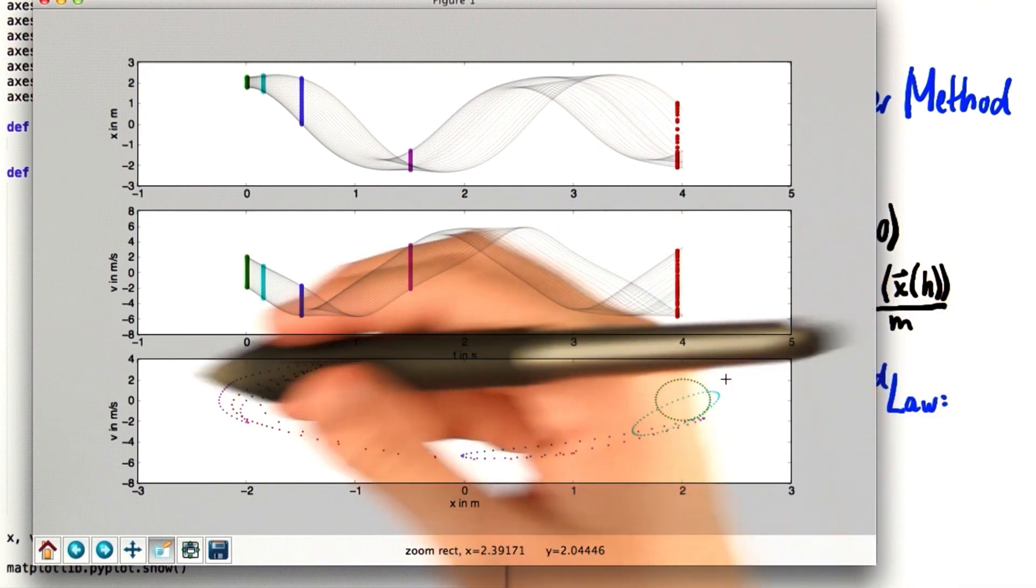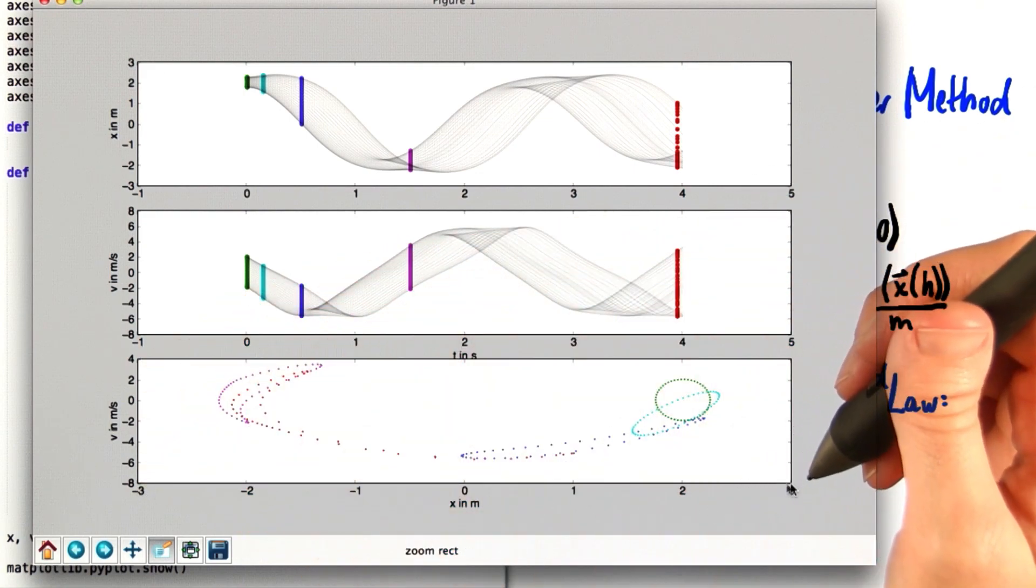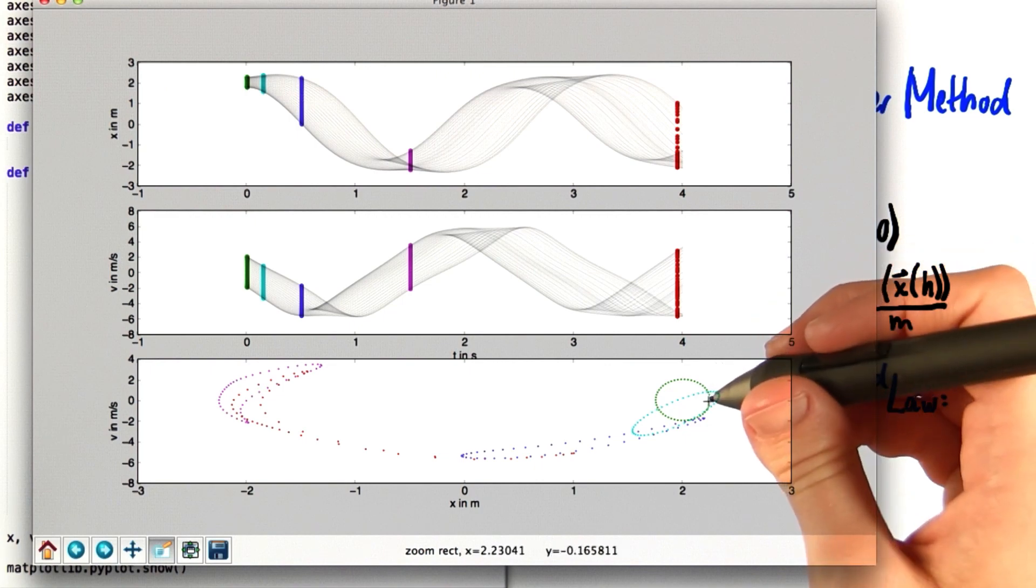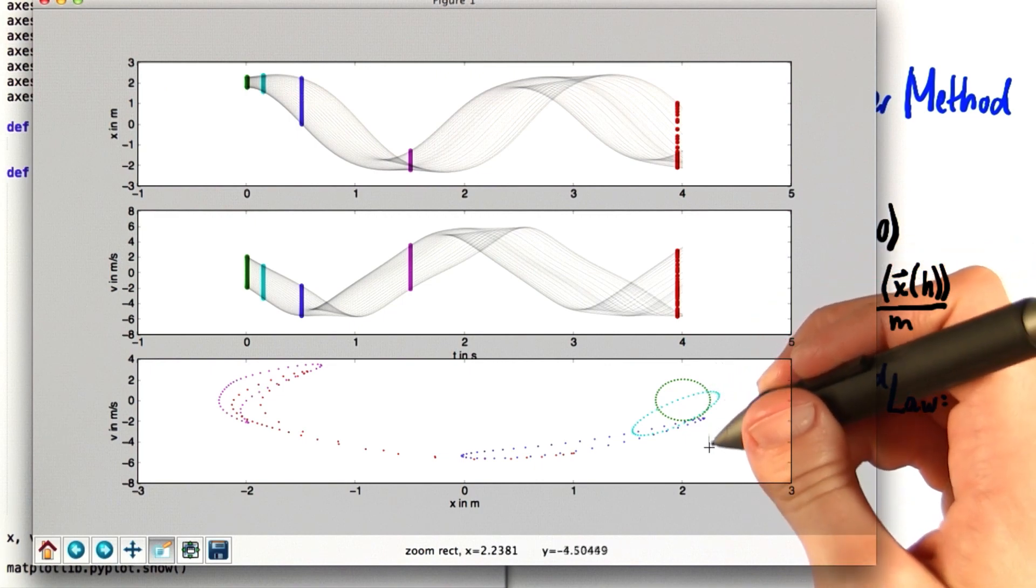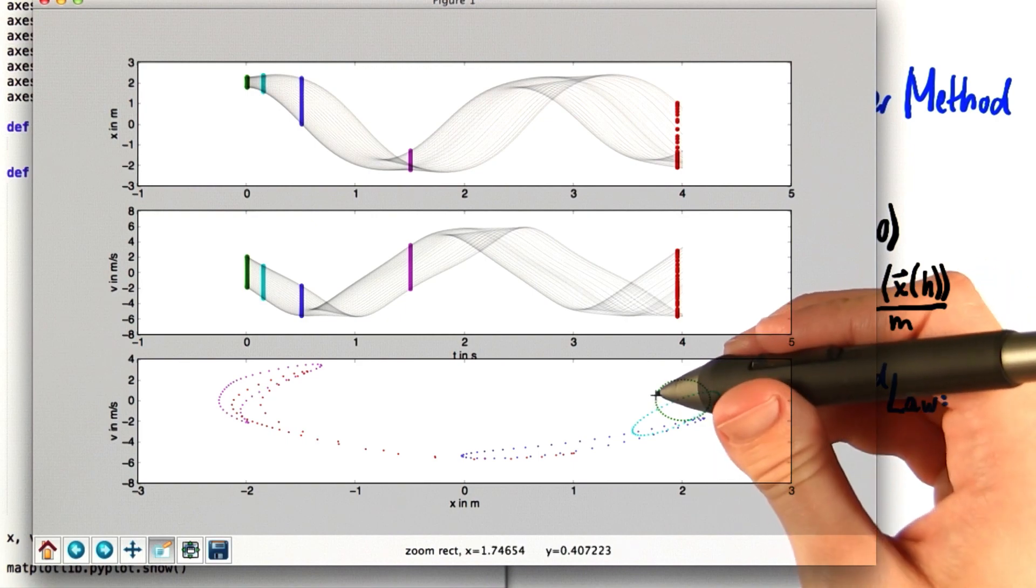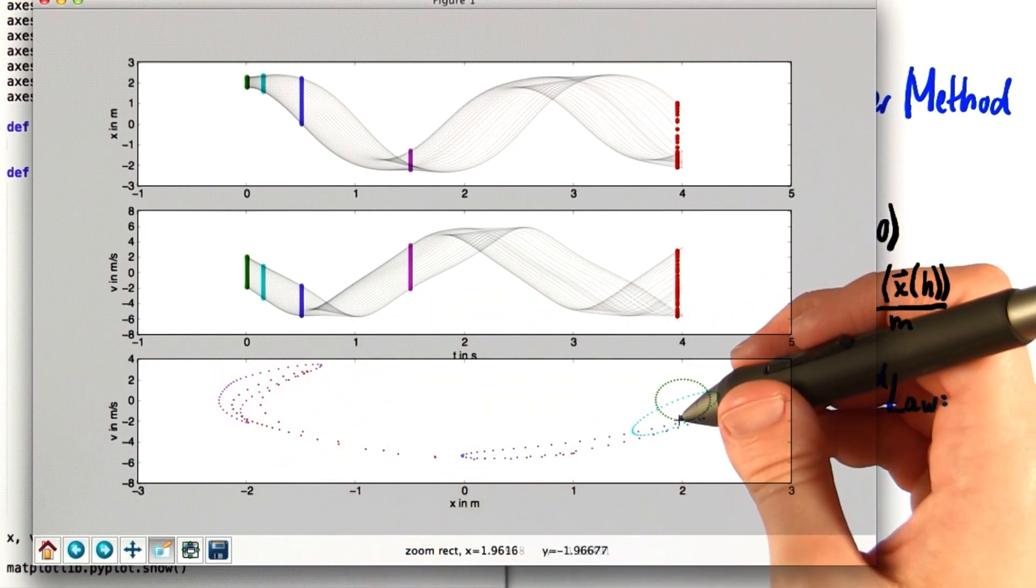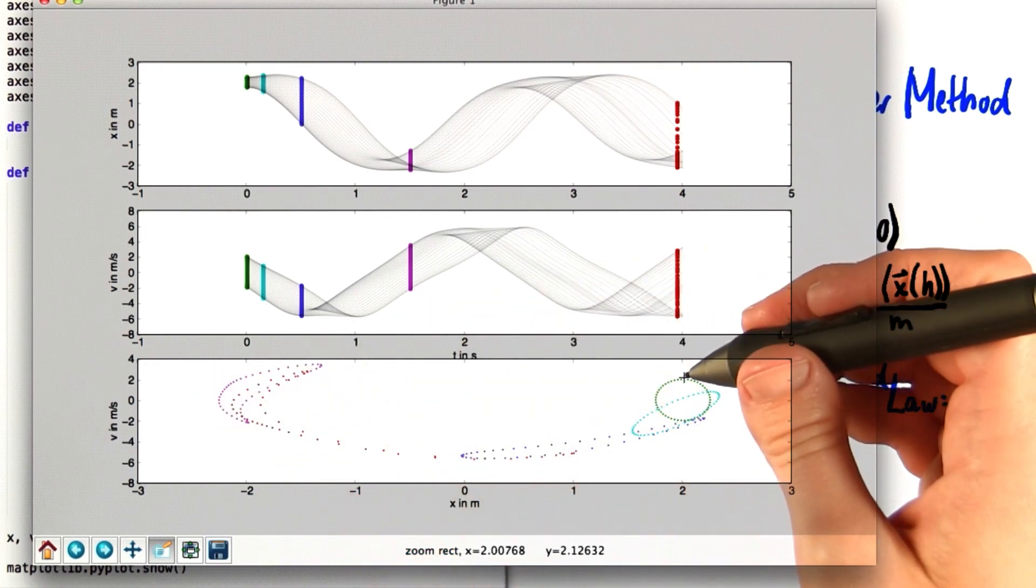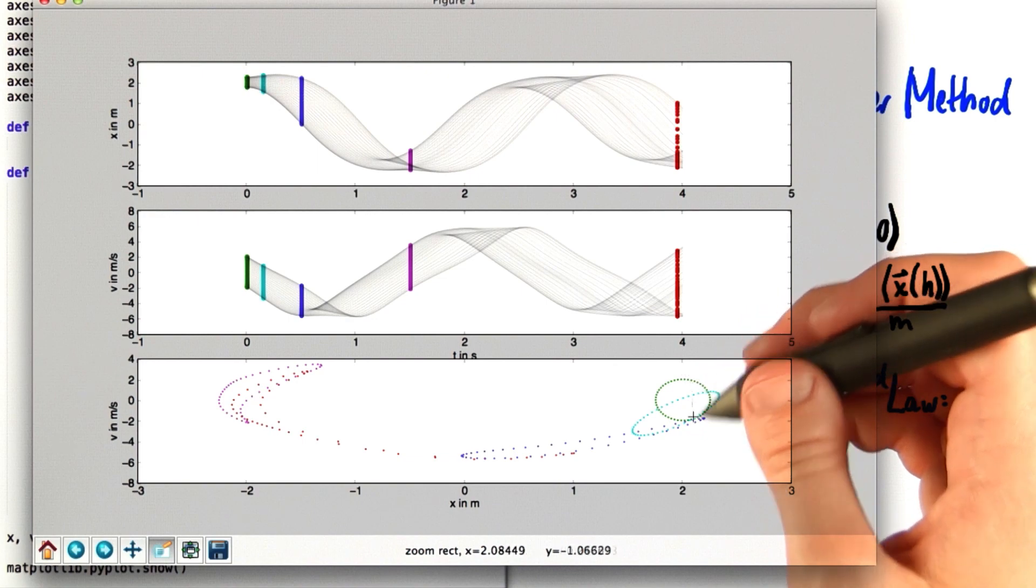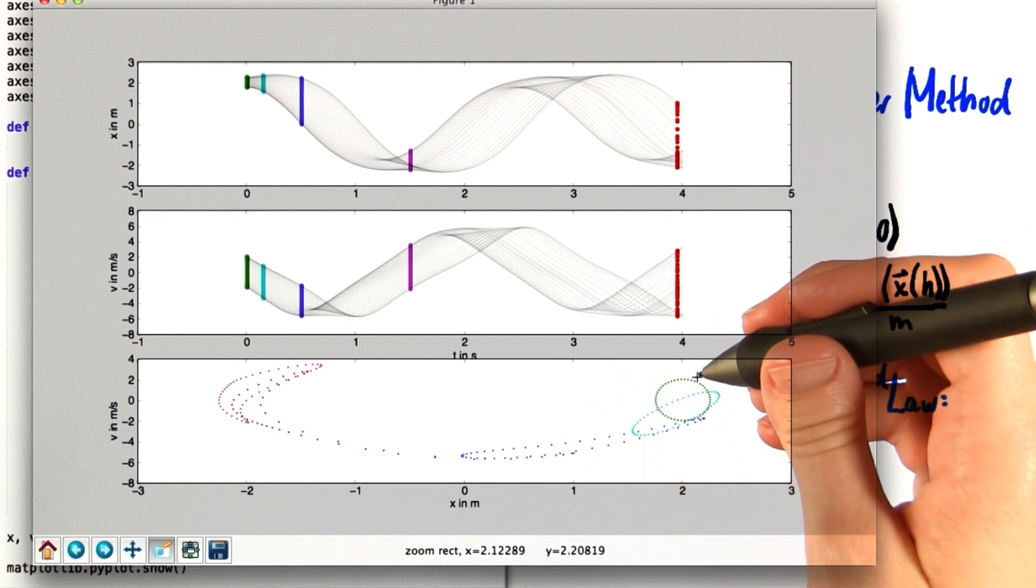Either way, this rightmost point on the ellipse corresponds to x equals 2.25. And the leftmost point corresponds to x equals 1.75. In terms of v, we have values ranging from negative 2 down here to 2 up here. So think about what equations for x and v you would need to create an ellipse with these dimensions.